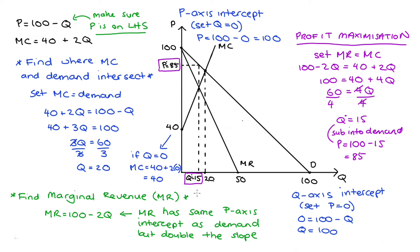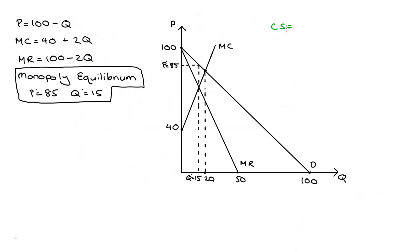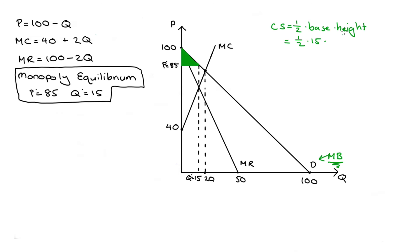Now for the welfare analysis, I'm going to look at consumer surplus, producer surplus, and deadweight loss. Consumer surplus is the area below demand and above price across the units supplied. This captures all units where the marginal benefit of consumption exceeds the price paid. Using half times base times height: the base is 15 and the height is 100 minus 85, which is 15, giving consumer surplus of 112.5.